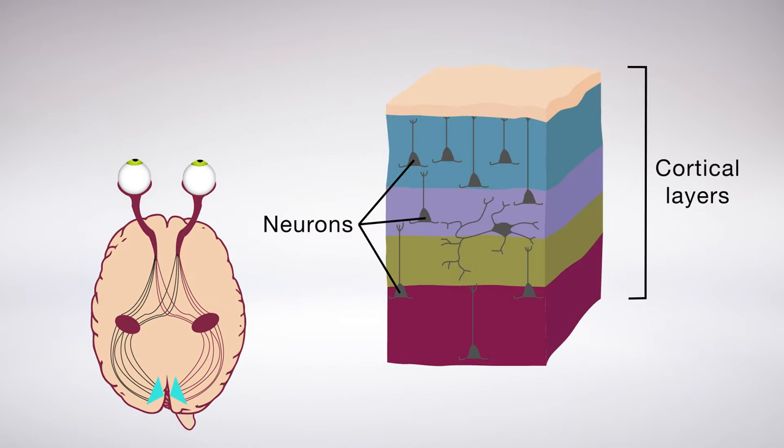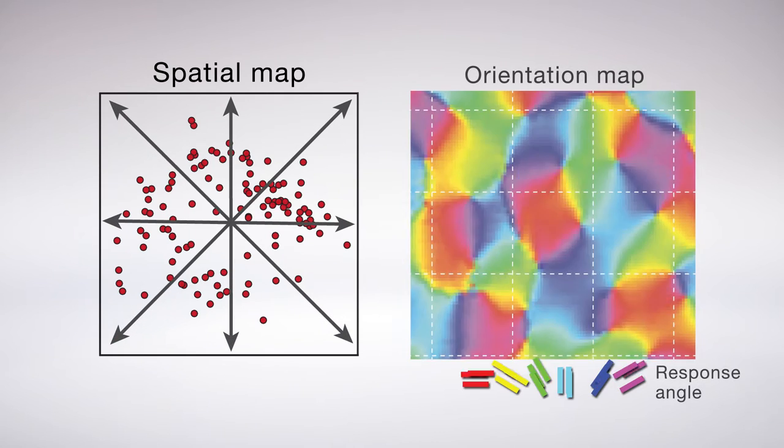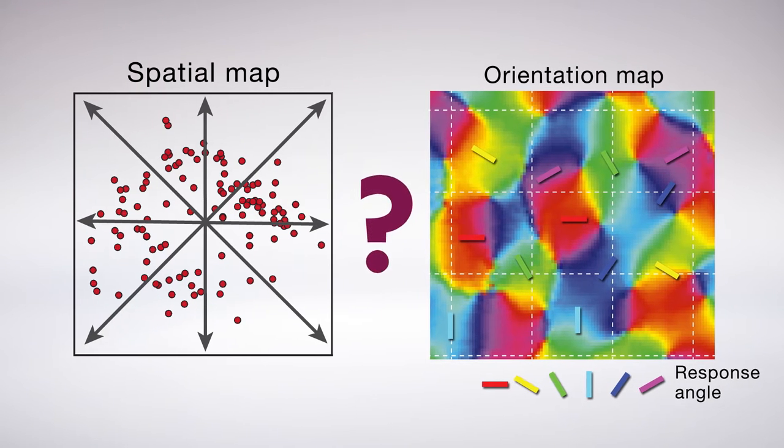It's there that thin layers of neurons create two equally important maps: spatial location and orientation. But exactly how those maps are made and coexist has been a huge mystery.